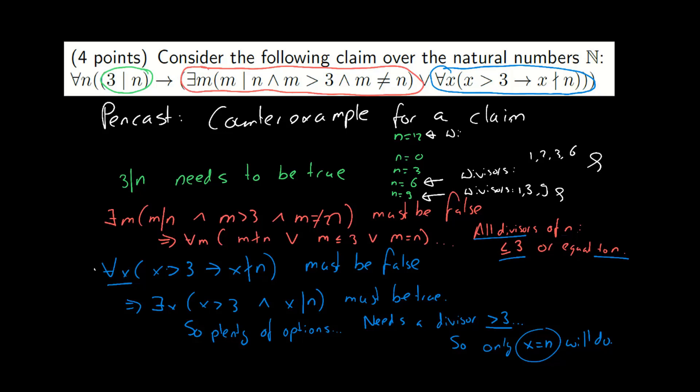12, however, won't do. Because 12 has as its divisors 1, 2, 3, 4, 6, and 12. And 4 and 6 are not allowed, because they are not divisors smaller than 3 or equal to n.